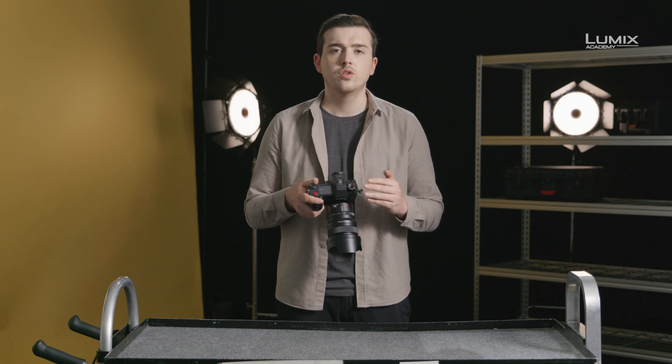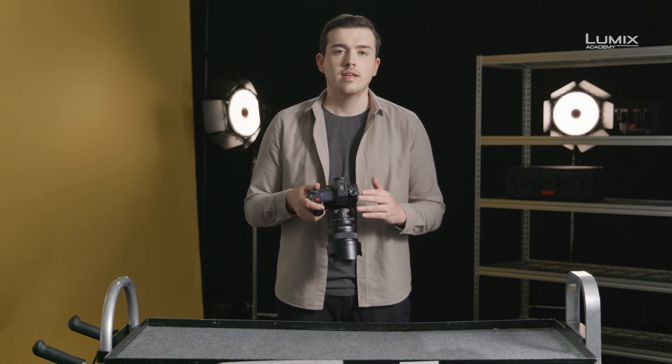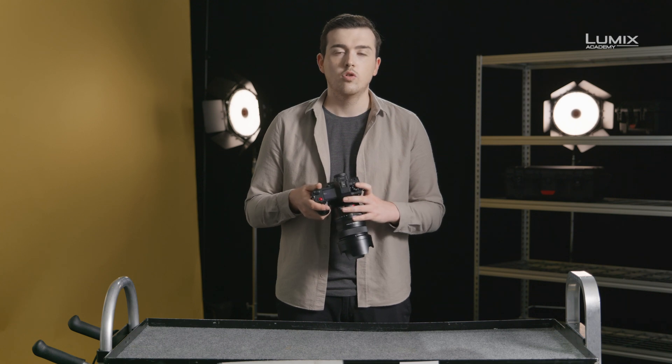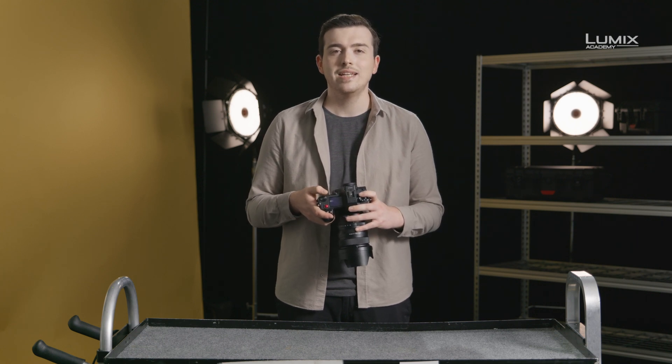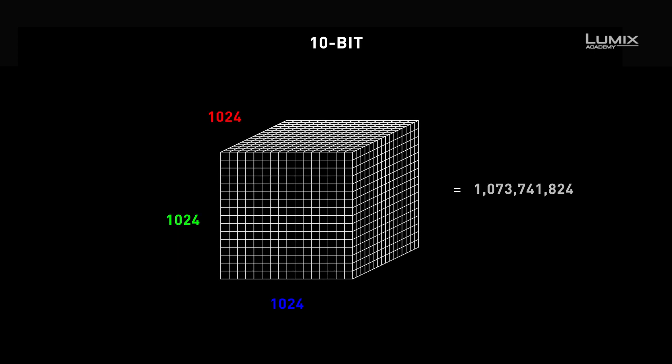But what does 10-bit and 4:2:2 really mean? 10-bit, or the color depth — also called bit depth — is a measure of how many individual colors the camera is capable of recording. 8-bit color depth contains 256 individual colors for each of the red, green, and blue channels. 10-bit color, on the other hand, contains 1024 individual colors for each RGB channel. That's 64 times more color information.